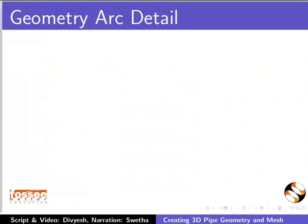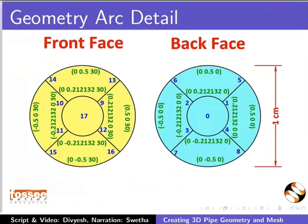For the curved geometry, we need to define the edges. There are a total of 16 arcs that we need to define. The arcs and the intermediate points are shown in the slide. Note that I have used the midpoint of the arc as the intermediate point.